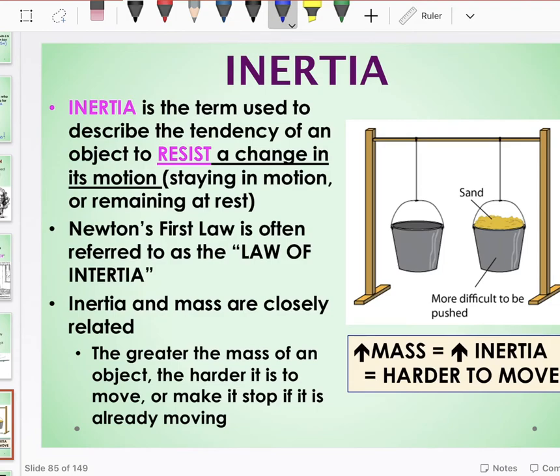Now Newton's first law is largely due to something called inertia. All objects that have mass have inertia. What inertia is, is the tendency, you should know this definition, the tendency of an object to resist a change in motion. The tendency of an object to resist a change in motion, which means objects want to keep doing whatever they're doing. They want to stay in motion if they are in motion, or they want to stay at rest if they are in rest. And this all has to do with the object's mass.